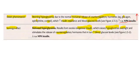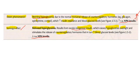Increase the NPH insulin. And in Somogyi effect, what we have to do — decrease the NPH insulin. In dawn phenomenon, we have already morning hyperglycemia, so we have to increase the dosage of insulin. But in Somogyi effect, we are already using excess exogenous insulin, so we have to decrease the NPH insulin injection dose.